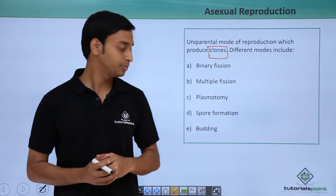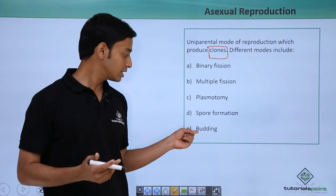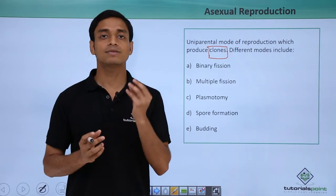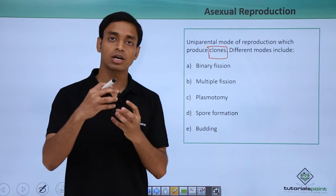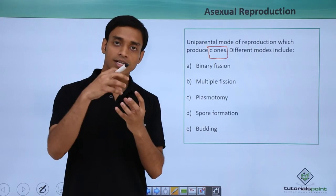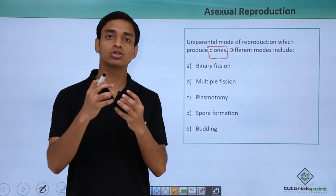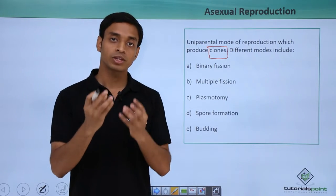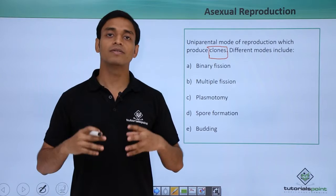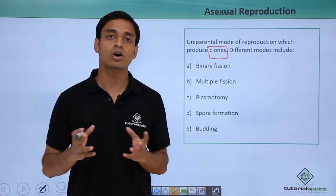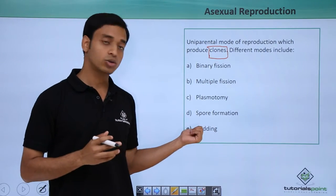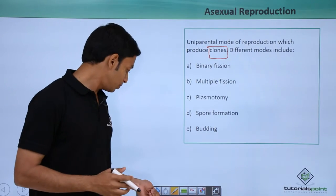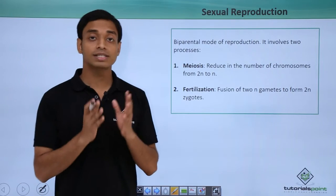The last type of asexual reproduction is budding. This is a very simple method where a very small outgrowth forms from the surface of the organism. This outgrowth slowly detaches and separates from the parent body, then develops into an absolutely new organism. This is known as budding.